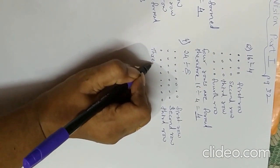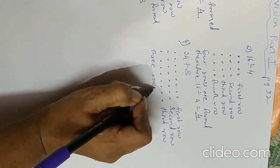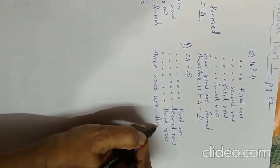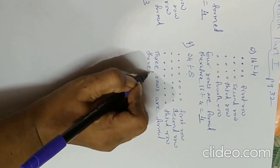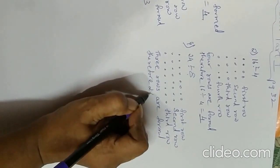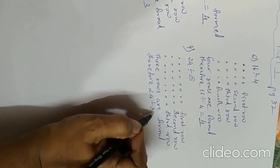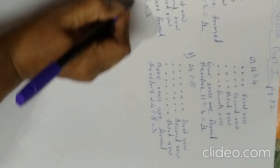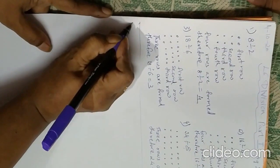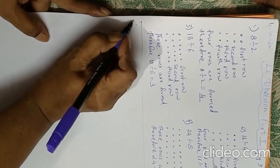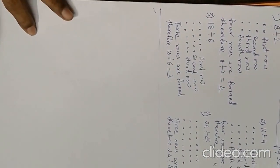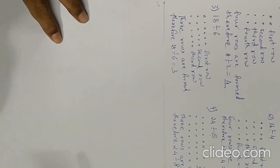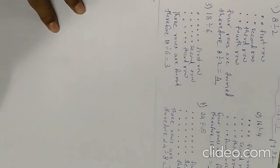How many rows are formed? Three rows are formed. Therefore, 24 divided by 8 is equal to 3. This completes your first question. Now let's move to the second question - page number 33. We are going to divide a two-digit number by a single-digit number.